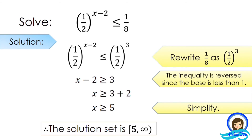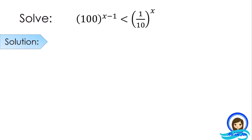I believe you have already grasped this lesson, but let me present the last example. We have 100 raised to an exponent of x minus 1 is less than 1 over 10 to an exponent of x. As you can see, the base on the left side is greater than 1, but on the other side the base is less than 1. This is just easy — follow along.